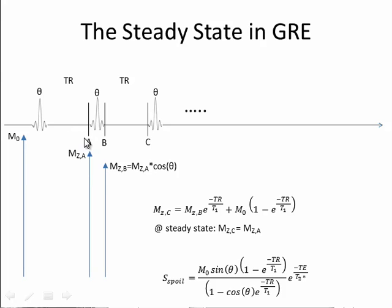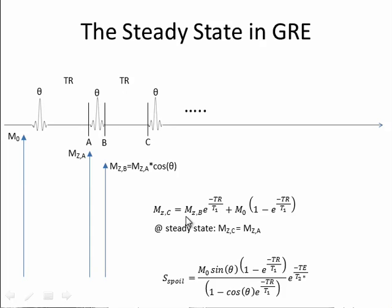At point B, MzB equals MzA times cosine of theta, where theta is the flip angle. From B to C, we have T1 relaxation, so Mz at C is given by the standard T1 recovery equation. To achieve the steady state, we want the situation where Mz at some point C equals Mz at some point A further down the sequence. Not necessarily the second and third pulse, but somewhere down the line this situation will be achieved — and that's the steady state.